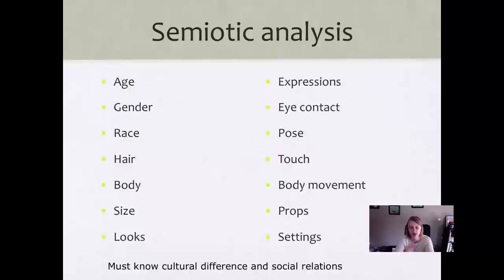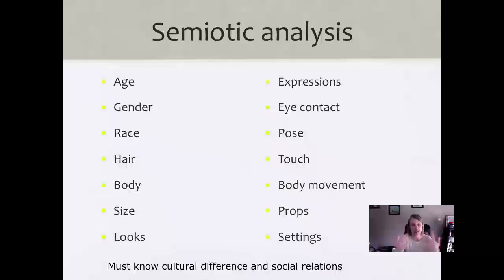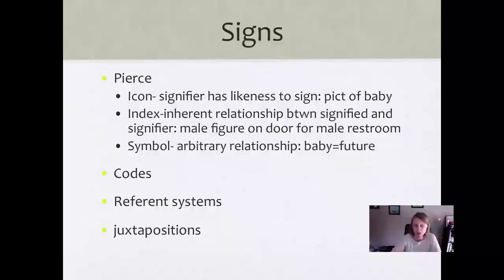Semiotic analysis has been used a lot in agriculture, looking at imagery and ads and what subconscious meanings they're putting behind things. Semiotic analysis is sort of knowing the cultural difference and the social relationship between things. When we do an analysis, we look at everything from age, gender, race, how the hair is styled, how the body is styled, size, looks, touch, movement, poses, contact, expression, every setting, every color — everything can come into play when we look at semiotics. That's one reason I really enjoy looking at it in terms of agricultural research.